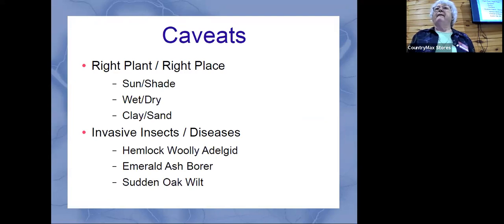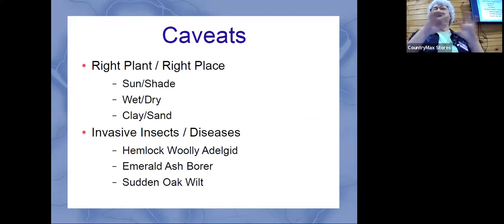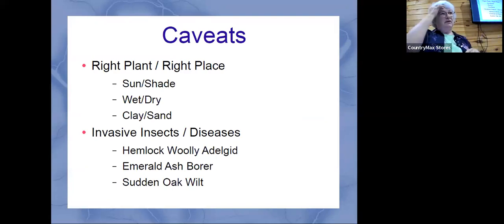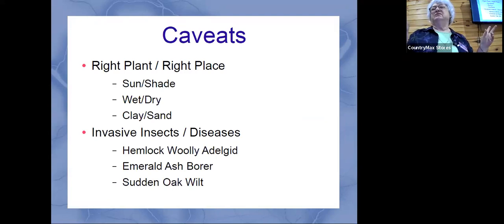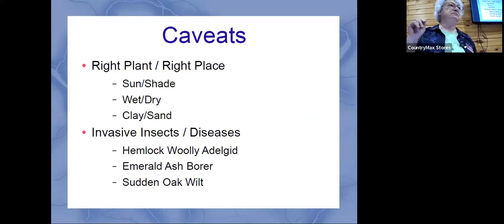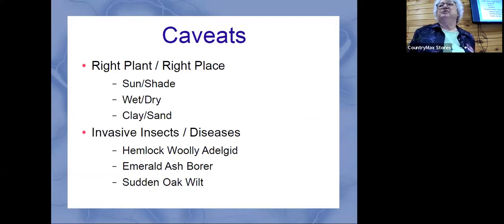The spotted lanternfly does its larval stage on a specific tree — the tree of heaven — which is kind of a shrubby tree that can grow tall. It's a non-native tree. You have to learn how to find that tree too. Because it's that serious, there's a national reporting center. If you see it, Google it and report it.